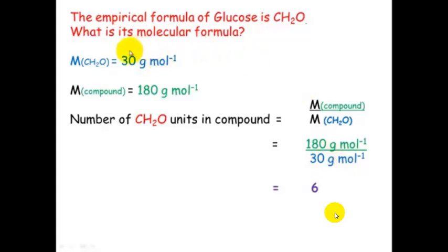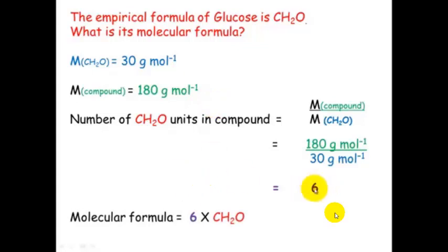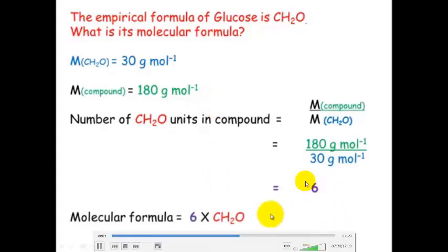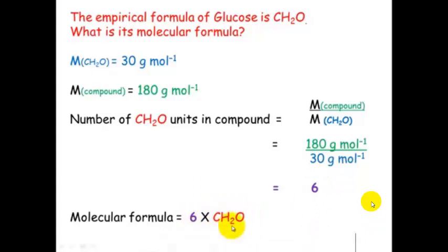Six CH₂O units fit into the 180 g/mol compound. Multiplying the empirical formula by 6 gives the molecular formula: C×6 = C₆, H₂×6 = H₁₂, O×6 = O₆. So the molecular formula is C₆H₁₂O₆.